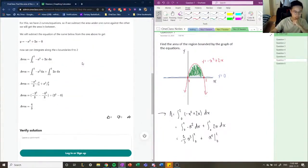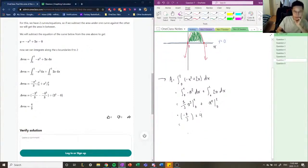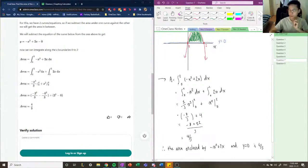And now we're going to calculate the area of these two, which is negative 8 over 3 minus 0 plus 4, which equals negative 8 plus 12 over 3, and we get 4 over 3. And that's the area under the curve, 4 over 3. Therefore, the area enclosed by negative x squared plus 2x and y equals 0 is 4 over 3.